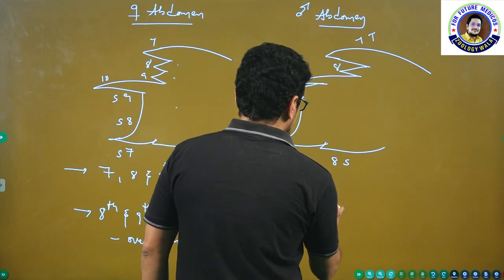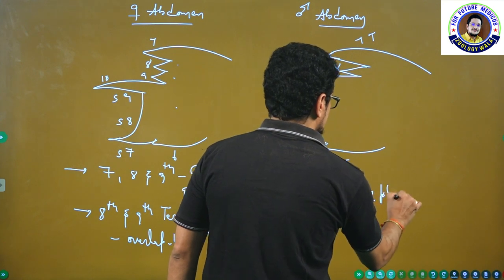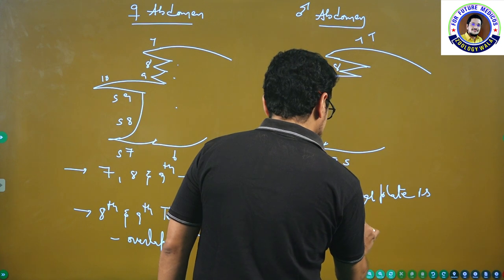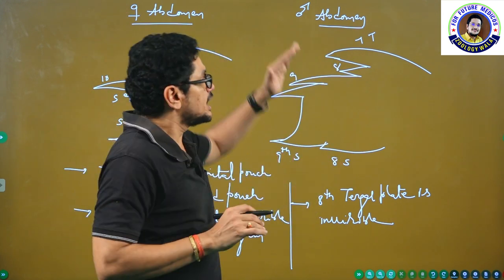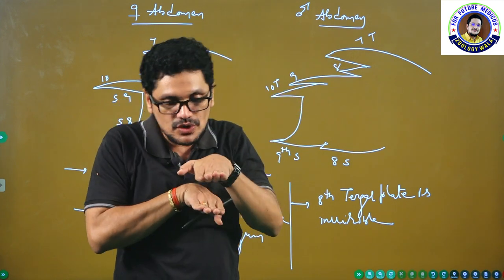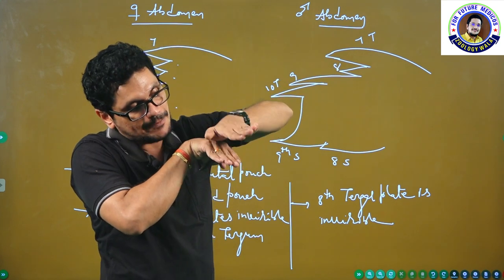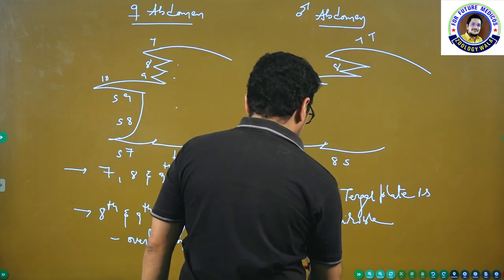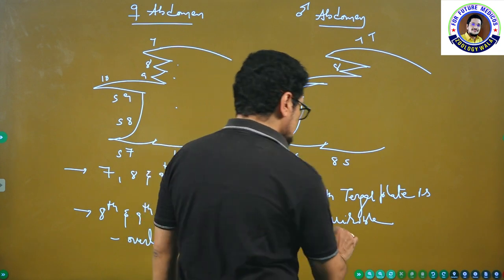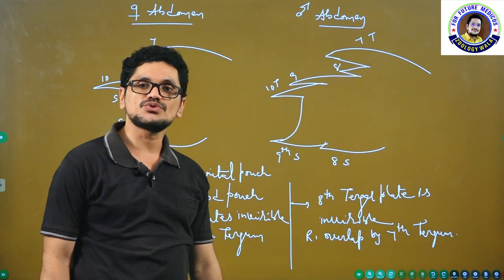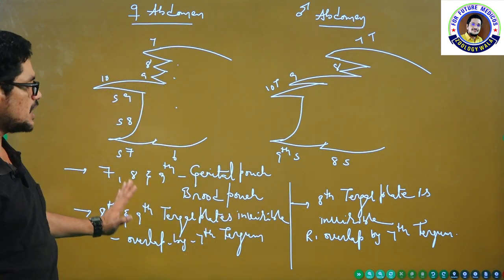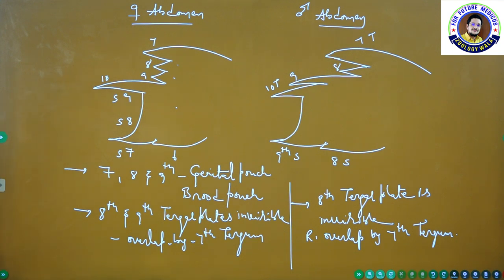In case of male cockroach, the eighth tergal plate is invisible from the aerial view — from the dorsal view. If you observe the dorsal side of the male cockroach, the seventh and eighth: the eighth tergal plate is invisible because it is overlapped by the seventh tergal plate. These are the points I want to convey. Please take one screenshot — these are important points.